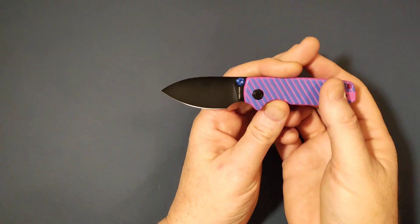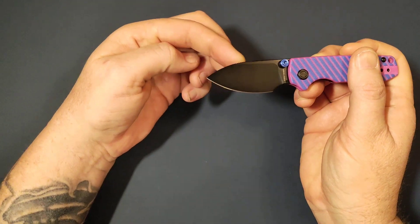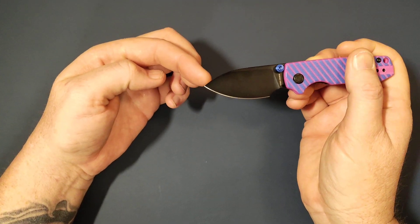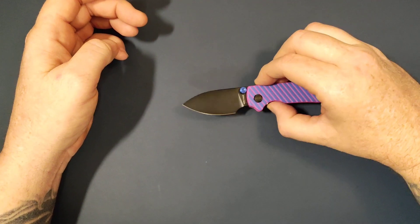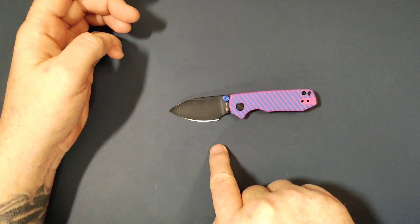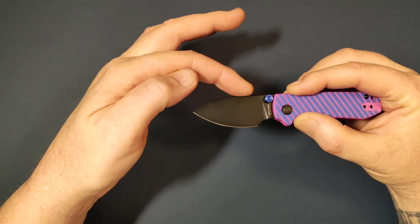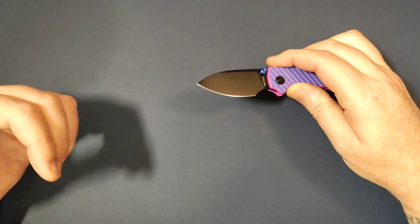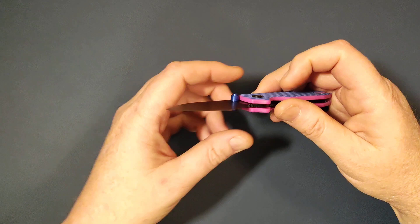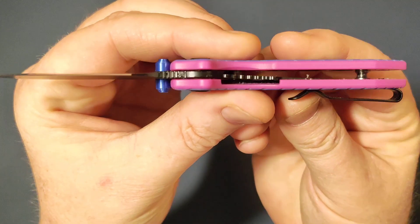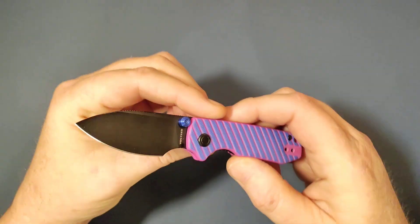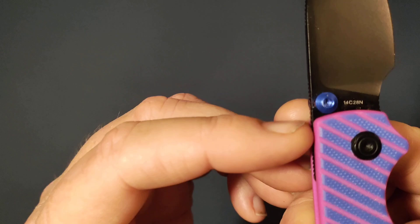We've got 2.34 inches on the blade, overall is 5.57 inches. The blade width is 0.98 inches. It is a liner lock. On the blade steel we're looking at 14C28N which is an awesome choice.